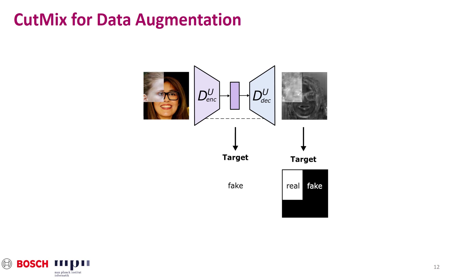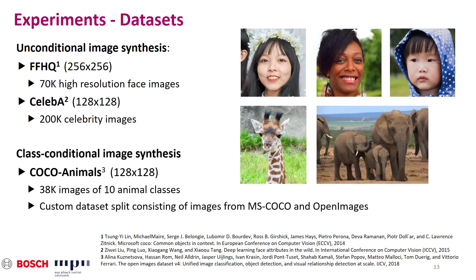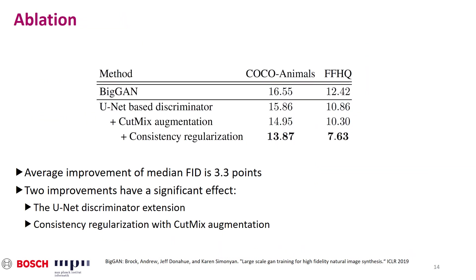Next, we will present the experimental results. The datasets we use for our experiments are the following. The CELEB-A and FFHQ datasets of faces are used for unconditional image synthesis on resolution 128 and 256. For class-conditional image synthesis on resolution 128, we make use of the COCO animals dataset, containing 10 animal classes. We use COCO animals and FFHQ to assess the effect of our proposed changes.